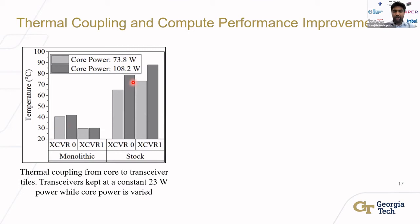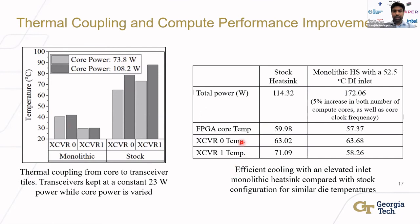This illustrates reduced thermal coupling between dies. We also evaluated computational performance benefits. We modified the benchmark program on the FPGA to achieve the same thermal conditions under both solutions. The stock heatsink operated stably at around 114 watts. To match those thermal conditions with the microfluidic heatsink, we increased the core base clock and number of DSP units programmed on the FPGA, achieving a 5% increase in compute frequency and utilization, corresponding to a considerable increase in compute performance at the same thermal operating point.